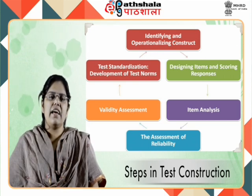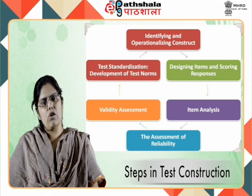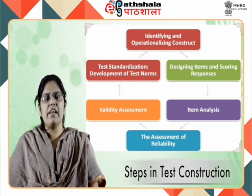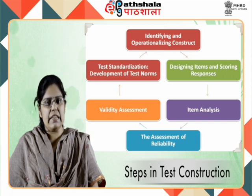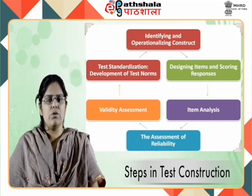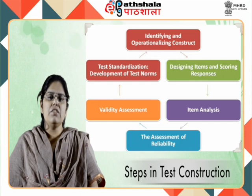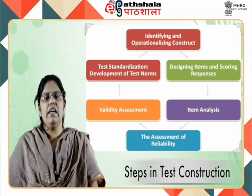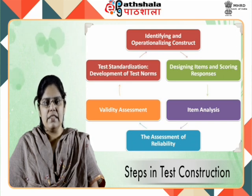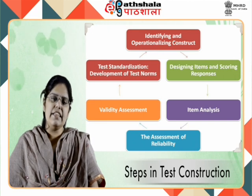The sixth step is test standardization and development of test norms. After validating the test, test norms are finally developed. Norms describe the distributional characteristics of a given population on the test. Individual scores can be interpreted in relation to the distribution of scores in the population. Large samples of respondents are used to estimate distributional characteristics such as mean and standard deviation. Age norms, grade norms, percentiles, deciles, and standard scores are various types of norms developed for standardization of a test.